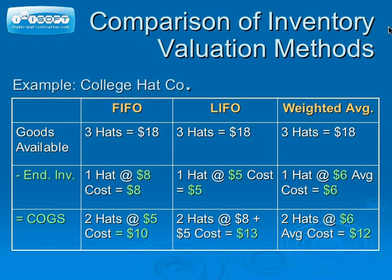This slide compares three inventory valuation methods. The column on the left shows a portion of the cost of goods sold formula, and the remaining three columns show the calculations under each of the inventory valuation methods. The cost of goods available for sale is $18 for three hats, which is the same under all three methods. As noted in the previous slide, under FIFO, the ending inventory would be one hat most recently purchased at $8, and the cost of goods sold would be two hats purchased at $5, or $10 total.